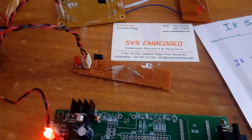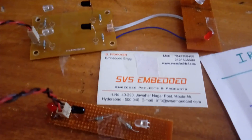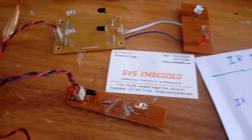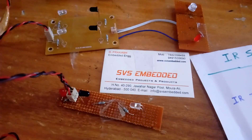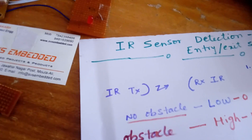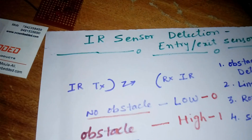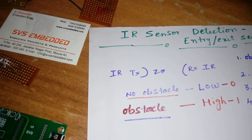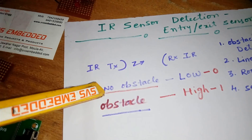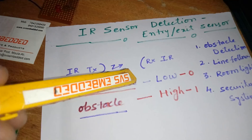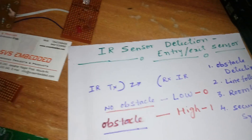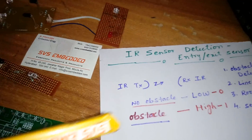Hi, we are from SVS Embedded. Today we are going to discuss an IR transmitter-receiver detection system, also called entry-exit detection. Here, one IR transmitter and one IR receiver: no obstacle gives you low, and obstacle detected gives you high.